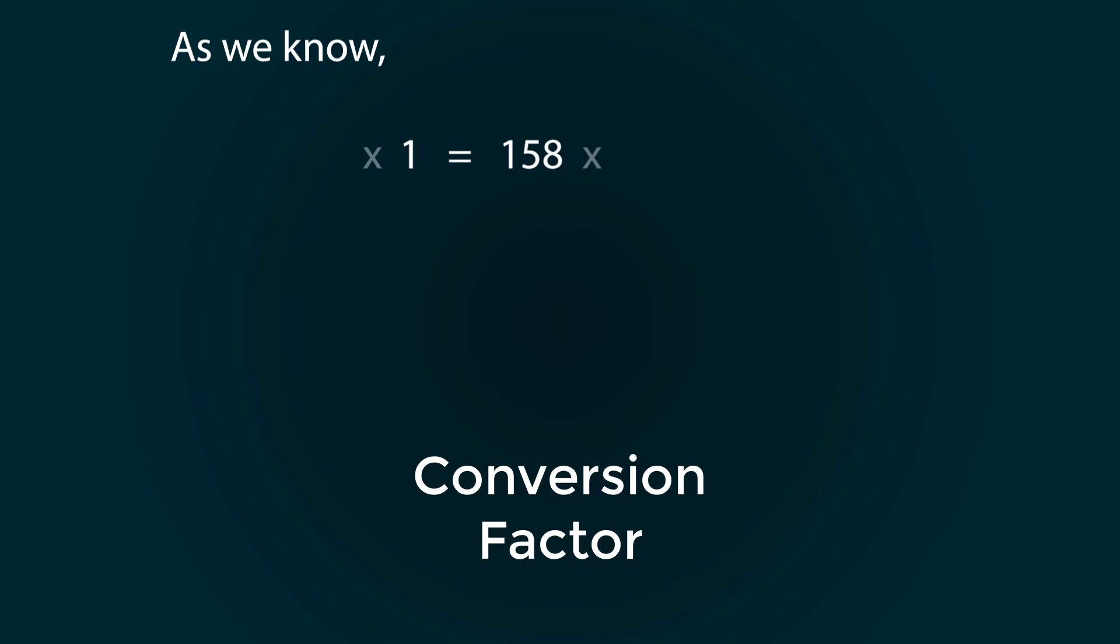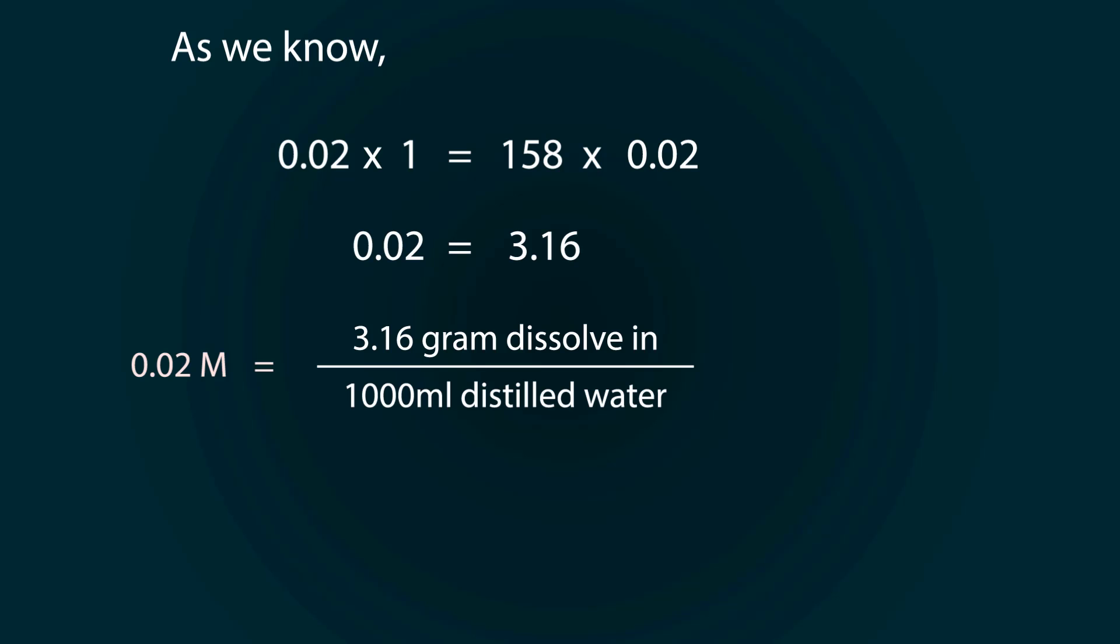we multiply 0.02 on both sides. We have to add 3.16 grams of potassium permanganate for 0.02 molar.